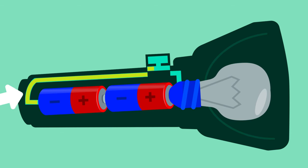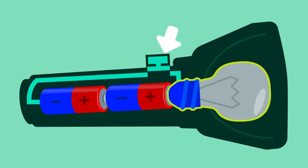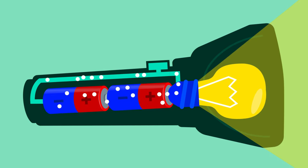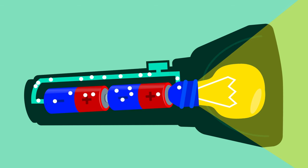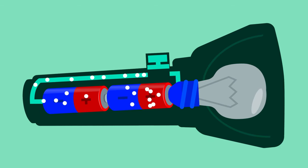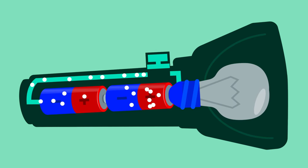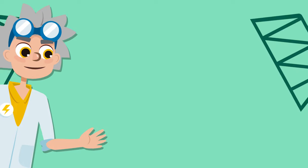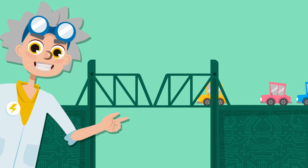If I turn on the switch, the electric charges begin to flow through the wires and the bulb emits light. If I turn off the switch, the electrical charges stop flowing and the bulb stops emitting light.